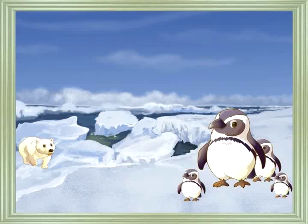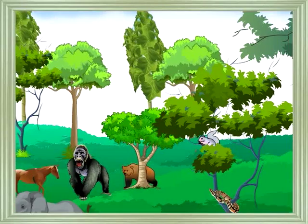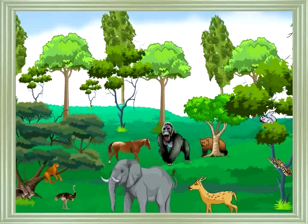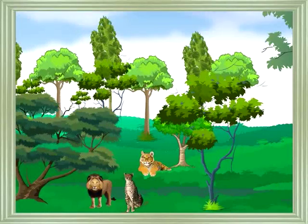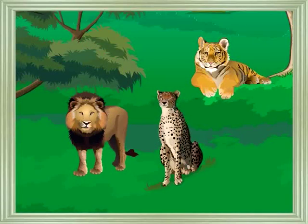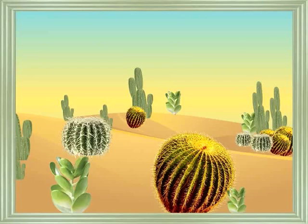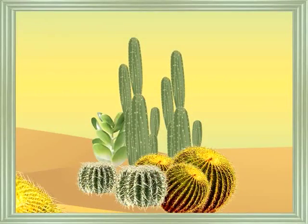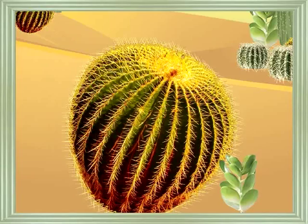Very few animals are seen in deserts and polar regions. Grasses, tall trees with broad leaves, and a large number of herbivorous animals are found in areas with good rainfall. Carnivores which feed on herbivores are also found in these areas.